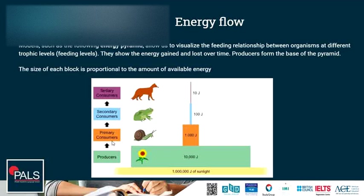Energy flow. Models such as the energy pyramid allow us to visualize the feeding relationship between organisms at different trophic levels. They show the energy gained and lost over time. Producers form the base of the pyramid — in this case they have 10,000 joules of energy gained from sunlight, which has a lot more energy. So not all the energy is actually used here. Energy is then taken in by the next level, the primary consumers who feed on the producers, and the energy from level to level decreases.